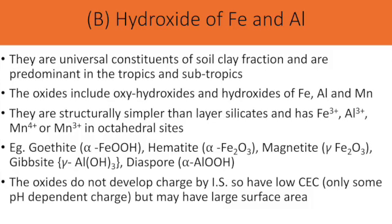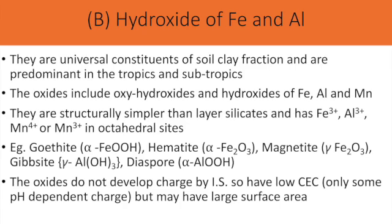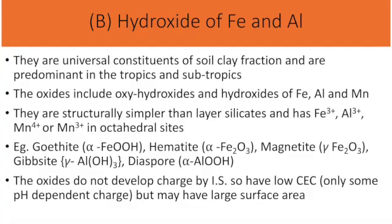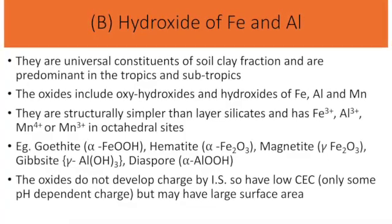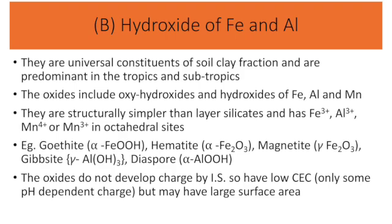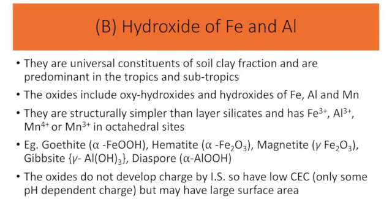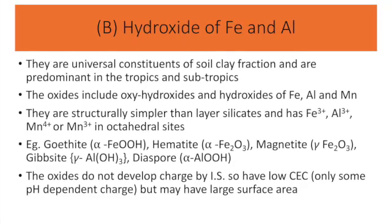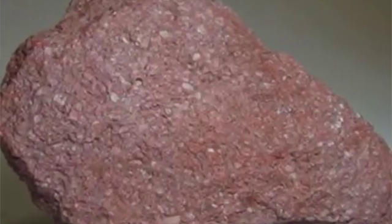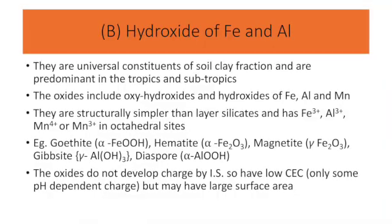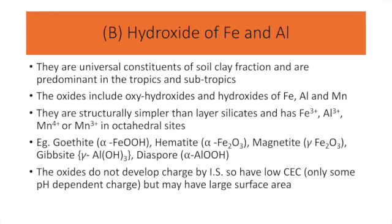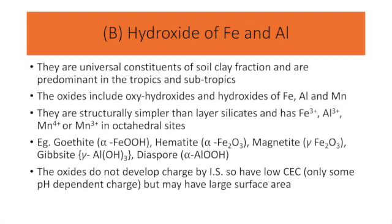The 2:1:1 group, also known as chlorite, has pseudochlorite and clinochlore as members. The second group of soil colloids is the hydrous oxides of iron and aluminium. They are universal constituents of the soil clay fraction and are predominant in the tropics and subtropics. The oxides include oxyhydroxides (OOH) and hydroxides (OH) of iron, aluminium and manganese. They are structurally simpler than layered silicates and have Fe³⁺, Al³⁺, Mn⁴⁺ or Mn³⁺ in octahedral sites. Examples include goethite, hematite, magnetite, gibbsite and diaspore. These oxides do not develop charge by isomorphous substitution, so they have low cation exchange capacity, but may have large surface area which gives them reactivity in soil.